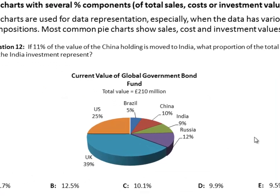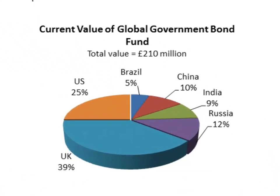The following is a pie chart that shows you the percentage composition of an investment fund by countries such as US, UK, Russia, India, China and Brazil. As you can see, the country allocations are provided in percentages, and the total value of the fund is 210 million pounds.